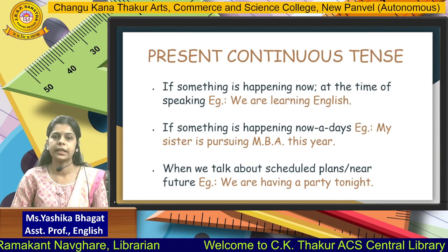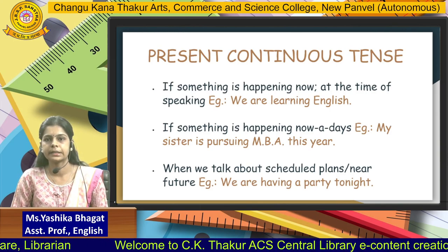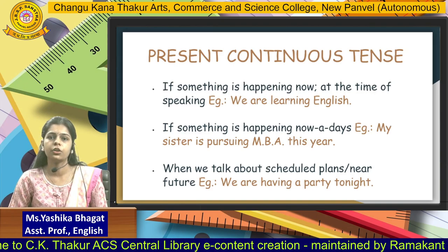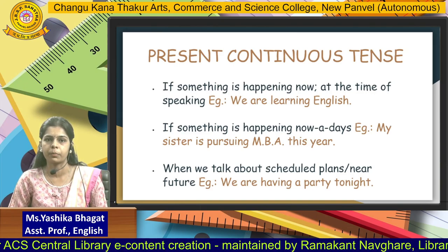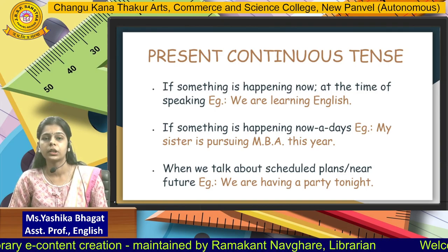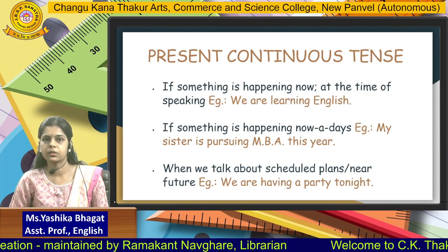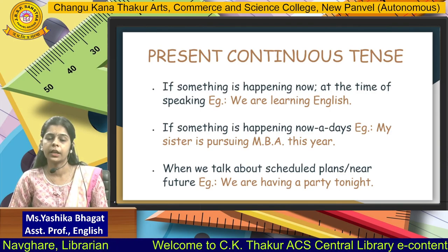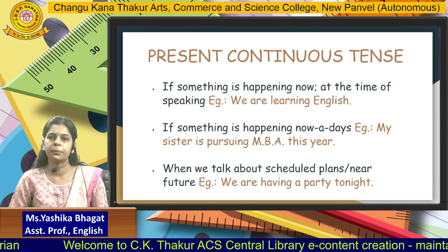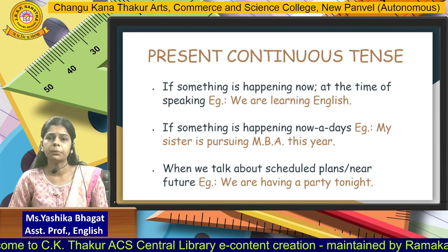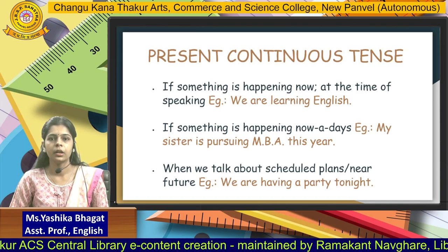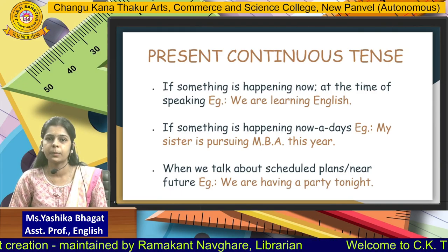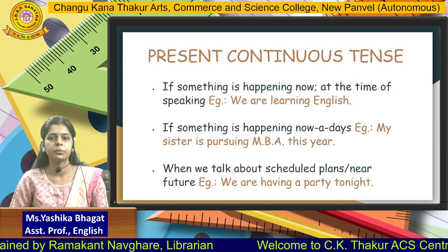The second type is classified as present continuous tense. Always remember: whenever you see the word 'continuous' in your tense, you are going to use the V1-ing form. Let us understand the three situations under which we use present continuous tense. First situation: if something is happening now at the time of speaking — for example, 'we are learning English.' The activity is happening right now at the given specific time, so we use present continuous tense.